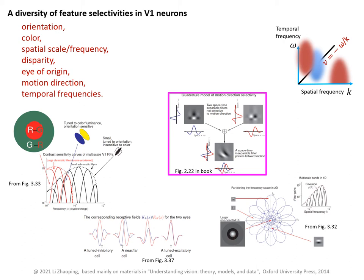We also notice some regularities. For example, neurons tuned to color are often tuned to smaller spatial frequencies and often not tuned to orientation. Neurons tuned to higher spatial frequencies tend to prefer lower temporal frequencies, and vice versa. Neurons tuned to large binocular or phase disparities tend to have larger receptive fields. We have explained these regularities from the efficient coding perspective, and we can ask whether there is a rule of thumb for understanding how feature tuning to one feature versus another are related to each other.